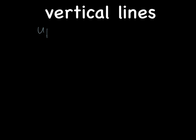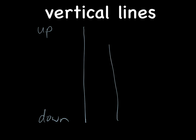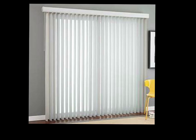The next lines we're going to talk about are vertical lines. Vertical lines travel up and down and down and up. You might have some vertical blinds in your house — they go straight up and down.